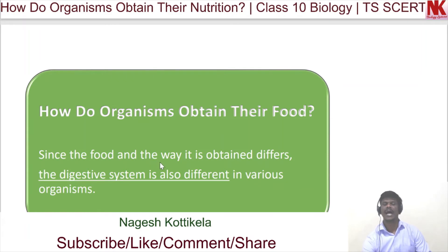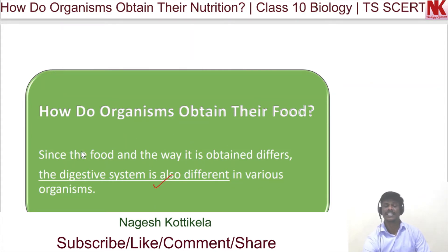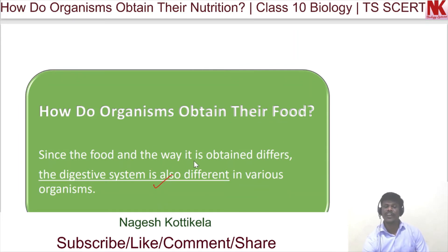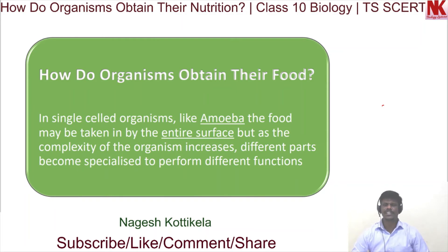Since the food and the way it is obtained differs — as seen with saprophytic nutrition where food is absorbed through the body surface, and parasitic nutrition where organisms derive nutrition without killing the host — the digestive system is also different in various organisms.